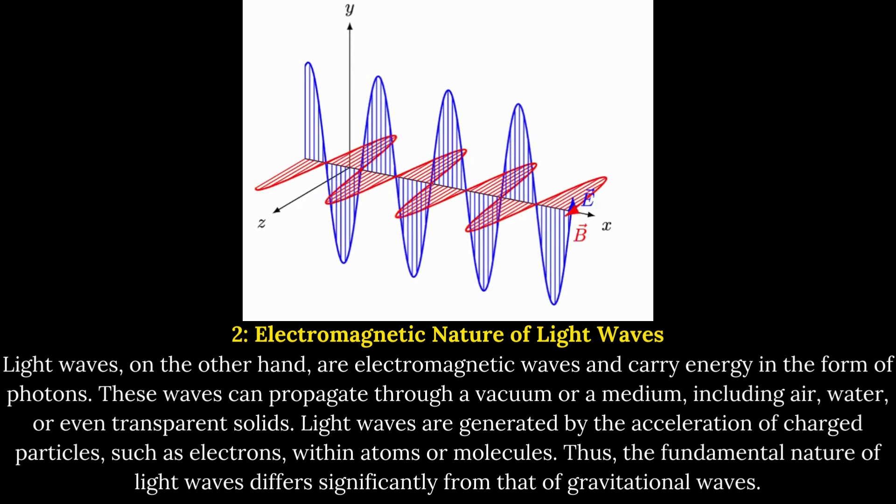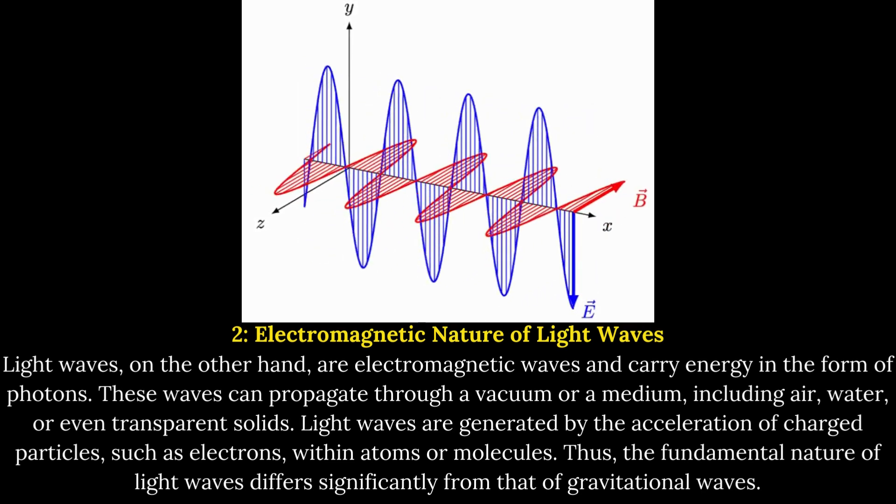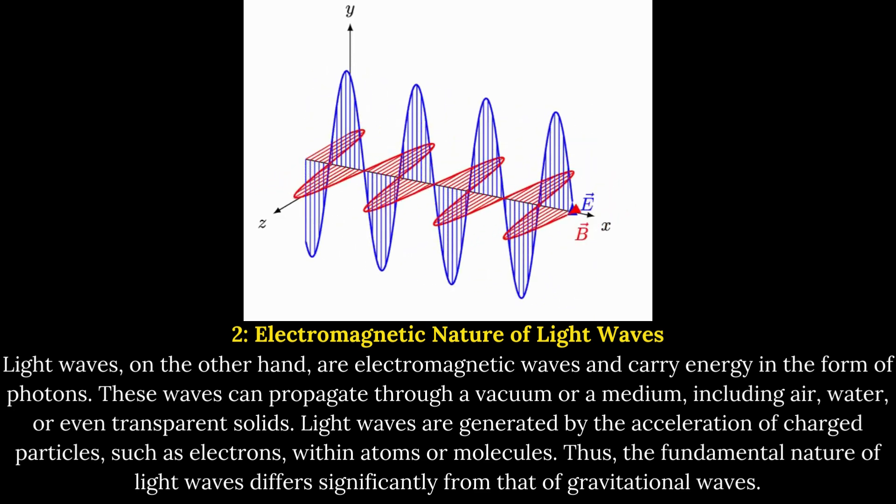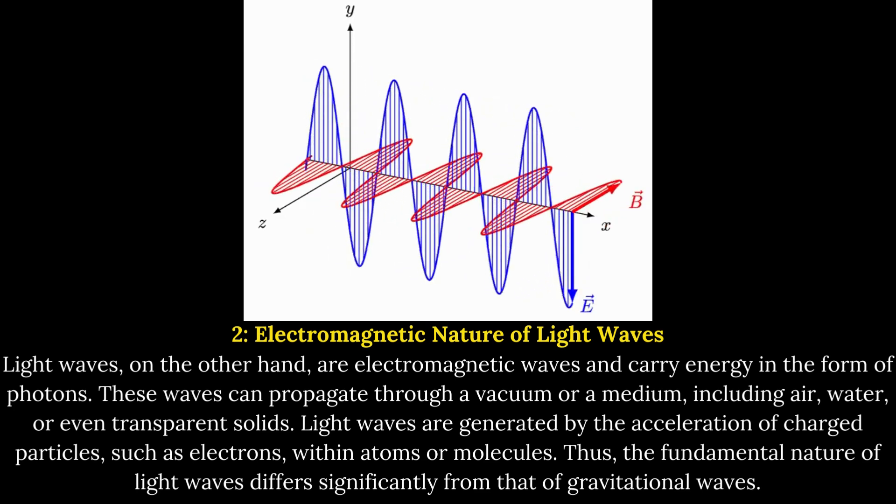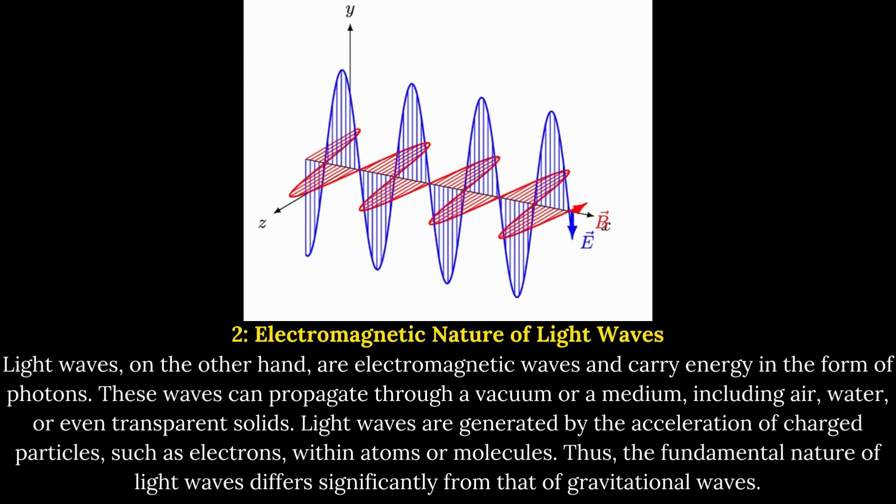Electromagnetic Nature of Light Waves. Light waves, on the other hand, are electromagnetic waves and carry energy in the form of photons. These waves can propagate through a vacuum or a medium, including air, water, or even transparent solids.